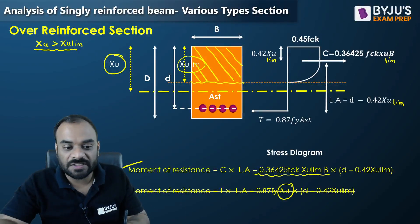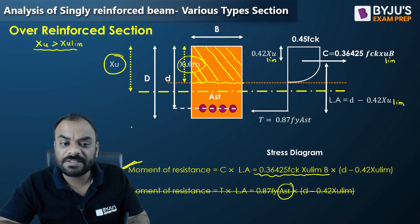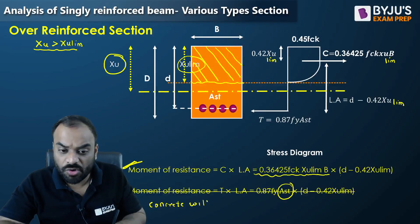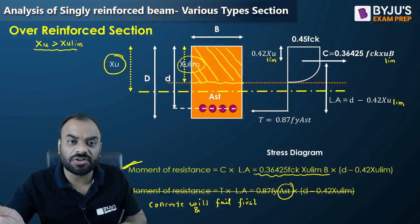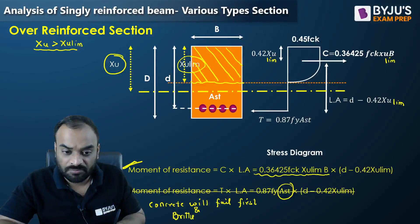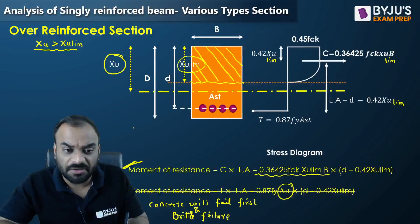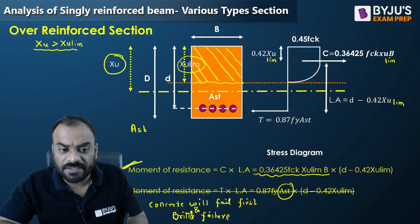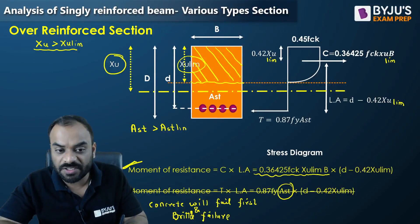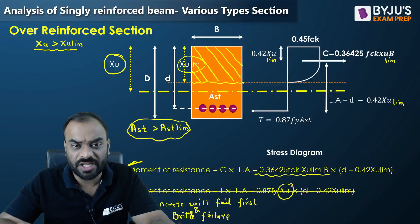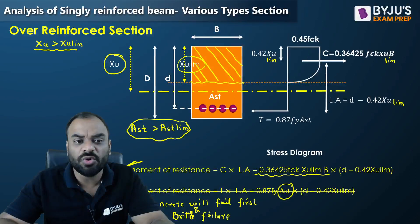Always prefer the compression-side formula for over-reinforced sections. In this case, concrete will fail first, resulting in brittle failure. To calculate Ast you can use the same equating formula, but note that the Ast value is higher than Ast,limiting — that is why it is called an over-reinforced section. Our main task is to utilize the under-reinforced or limiting section in practice; we do not design or use the over-reinforced section in the field.